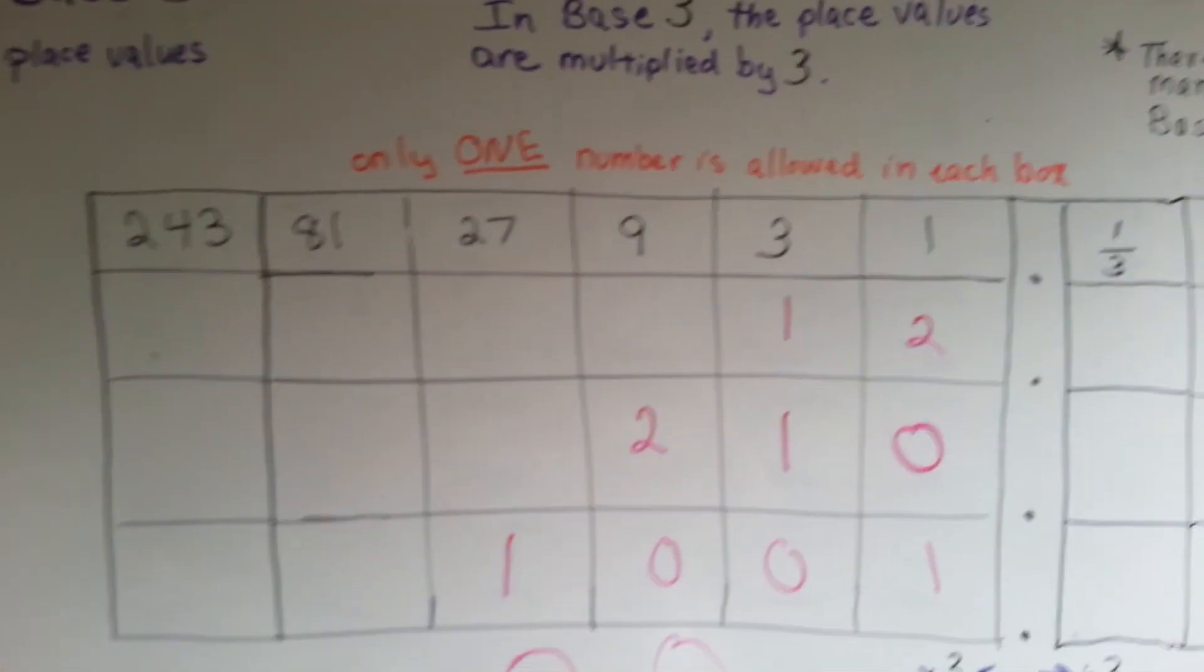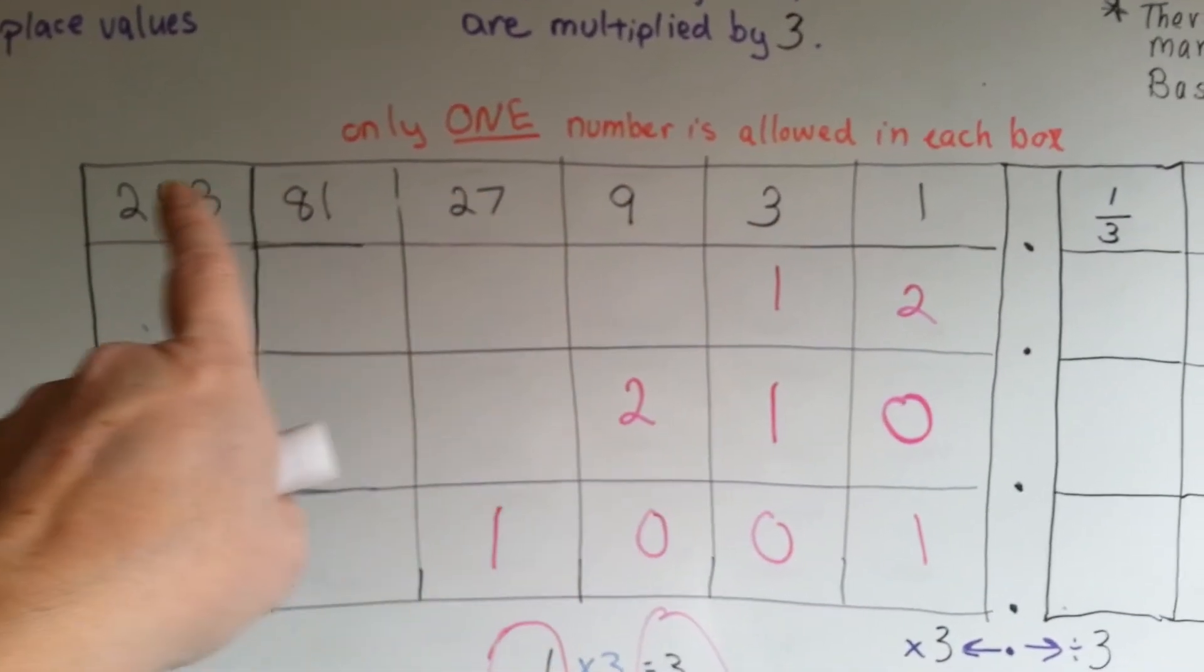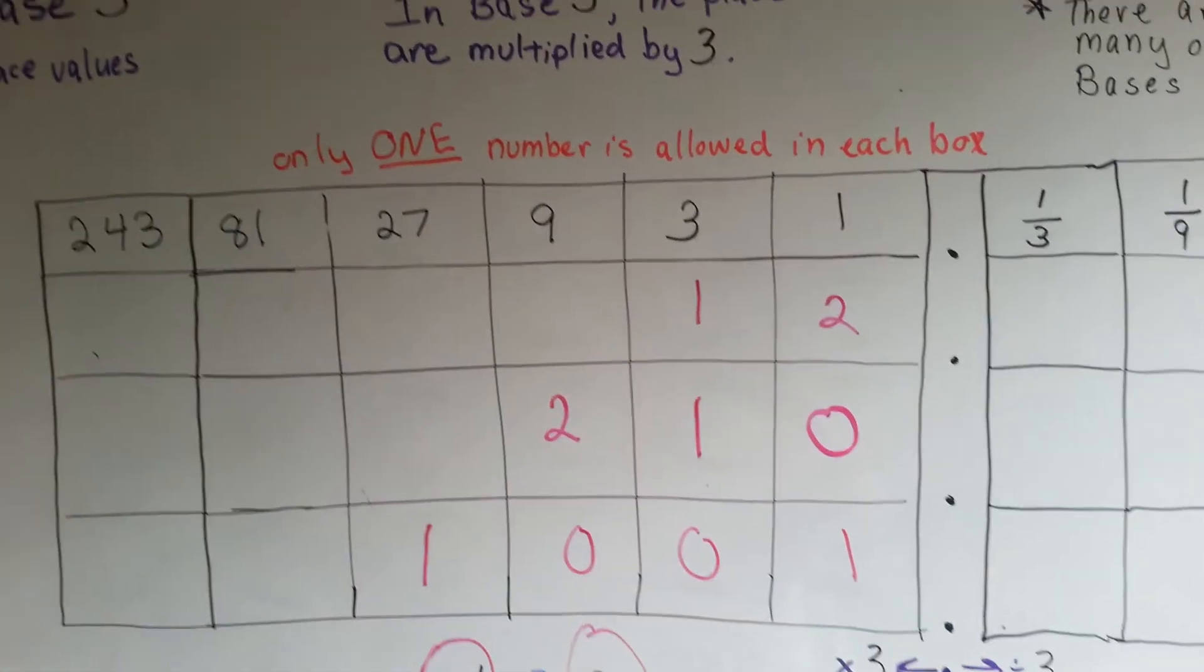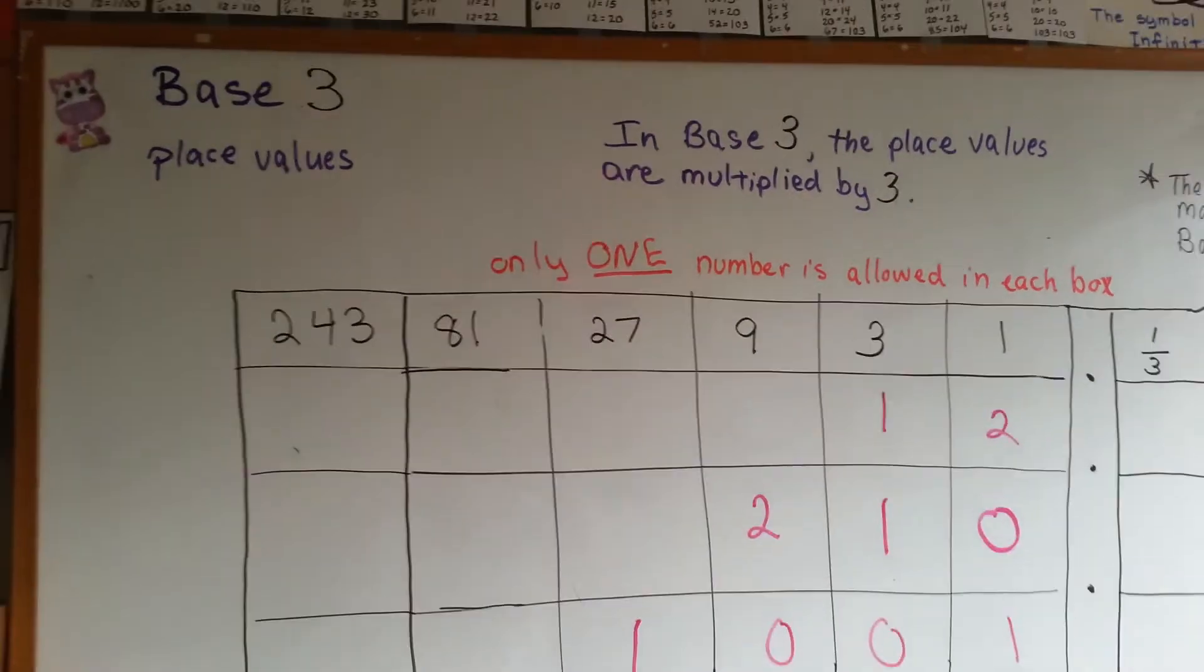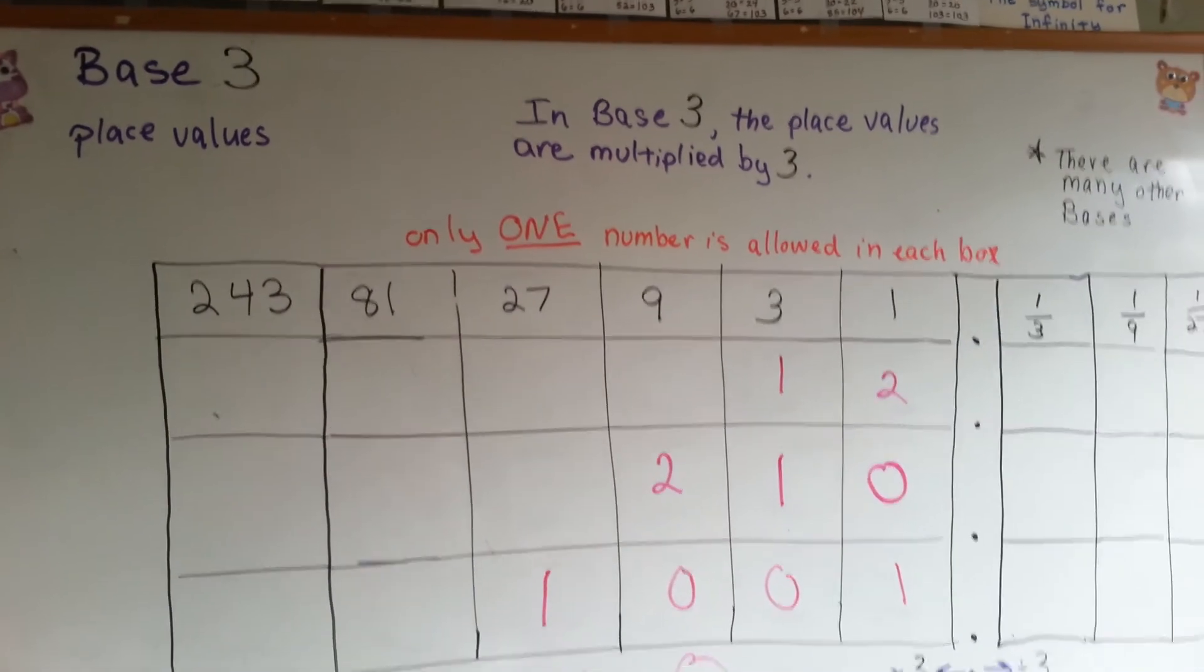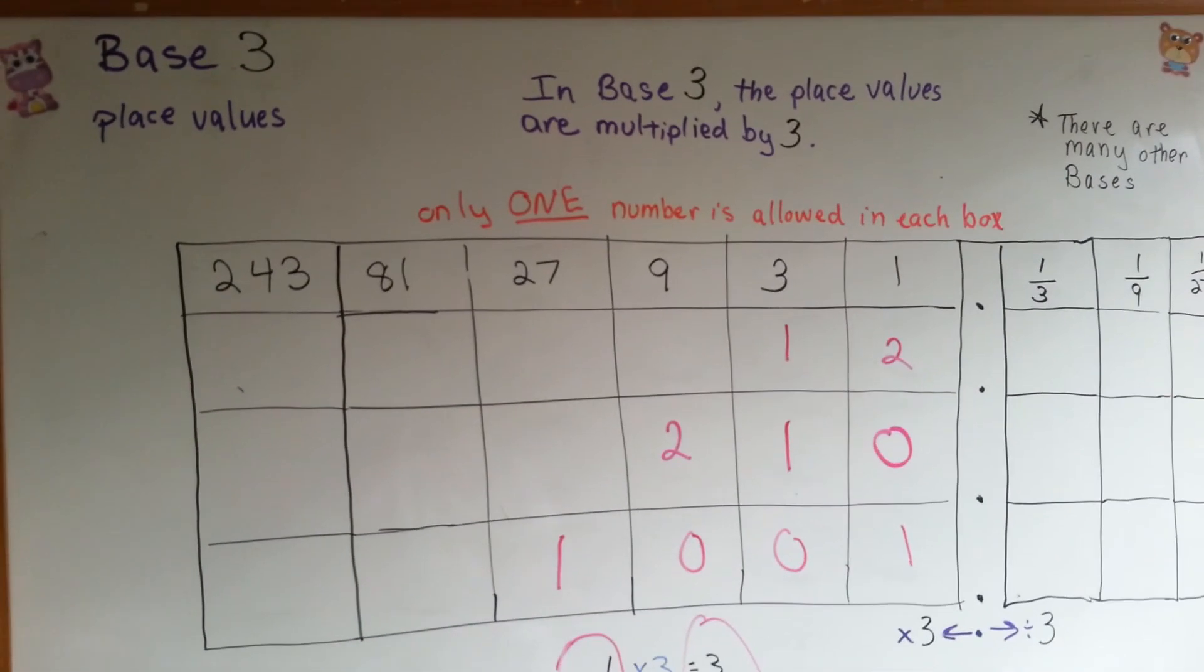That's how base 3 works. You multiply by 3 going to the left. You divide by 3 going to the right. The next video we're going to make is base 2, which is binary, like in binary code with computers. Hope to see you there.